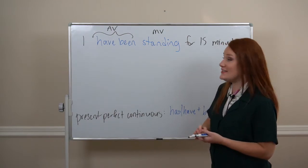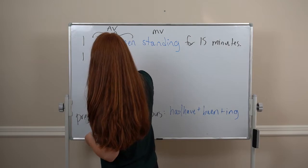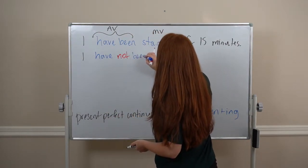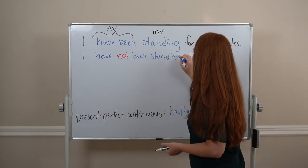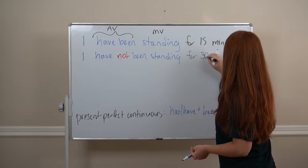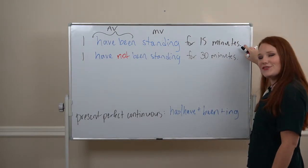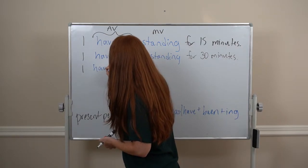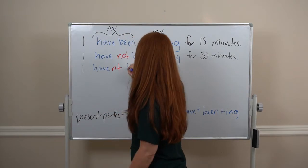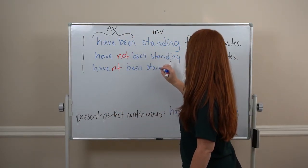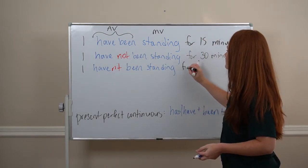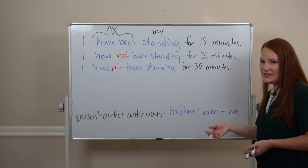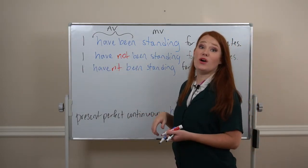We can make these sentences negative. For example: I have not been standing for 30 minutes — I've been standing for 15 minutes. We can also do a contraction: I haven't been standing for 30 minutes. Or: you haven't been standing, she hasn't been standing. 'Not' will go between our two auxiliary verbs.